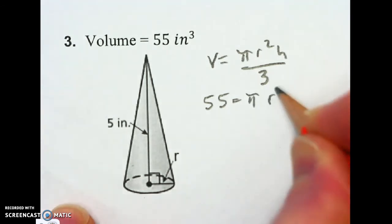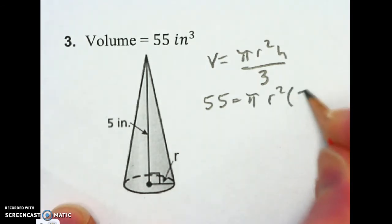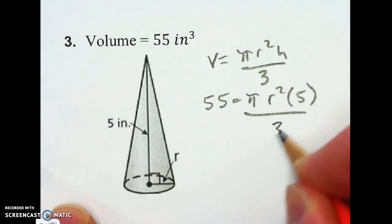So I'm going to write all that out. Pi R squared, and then where the height goes, I'm going to put a 5 and divide it by 3.